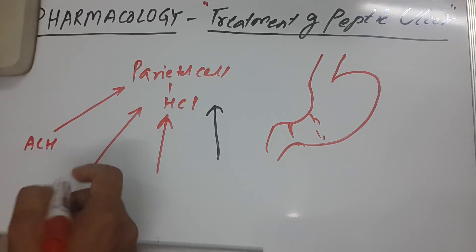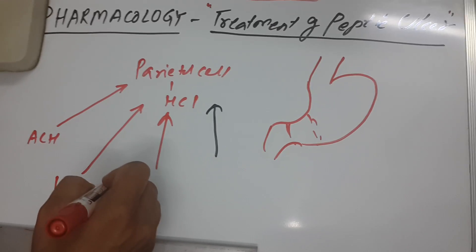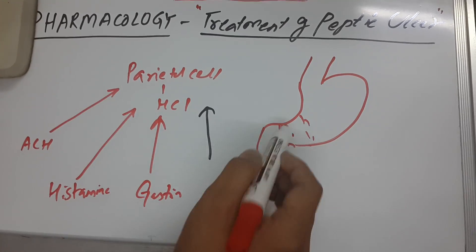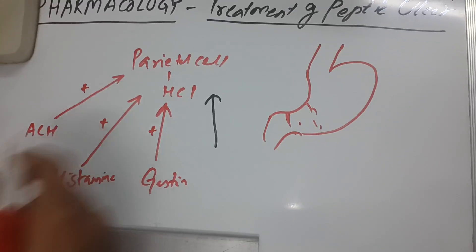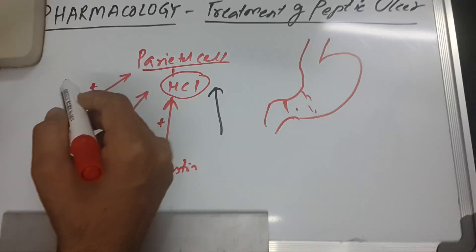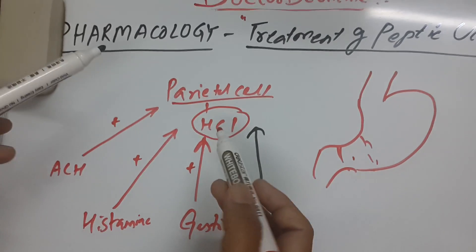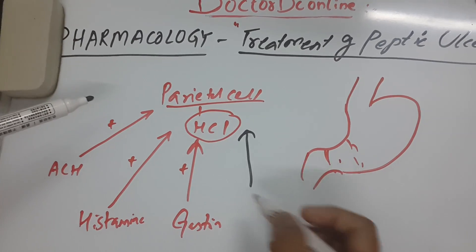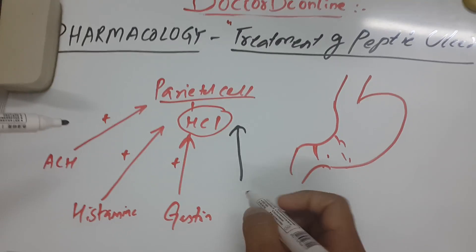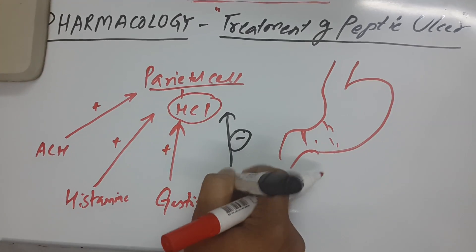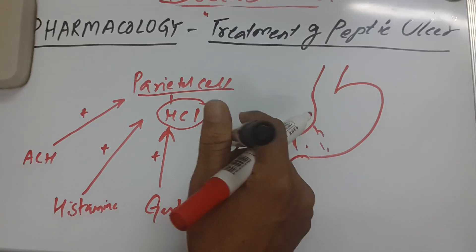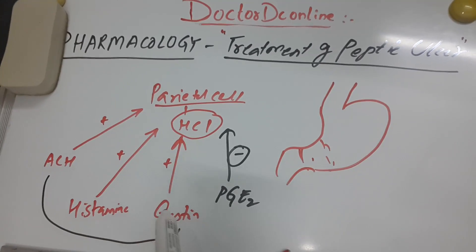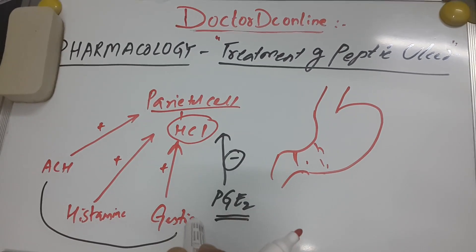The first stimulators are: acetylcholine (parasympathetic), histamine — secreted by ECL cells — and gastrin, from the G cells in the antrum. These are the stimulators of parietal cells, which is why there is increased HCl in peptic ulcer, exposing and destroying the mucosa, causing ulceration. There is one inhibitor: prostaglandin PGE2. You need to remember these three stimulators and one inhibitor, prostaglandin.